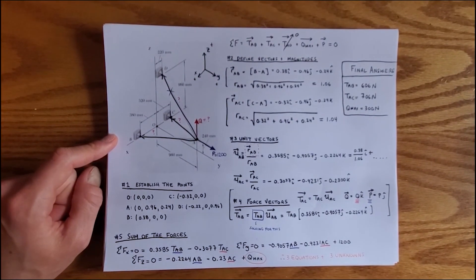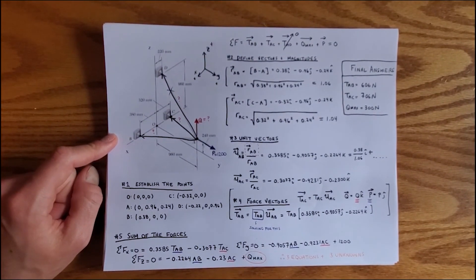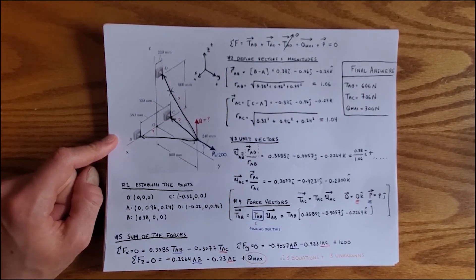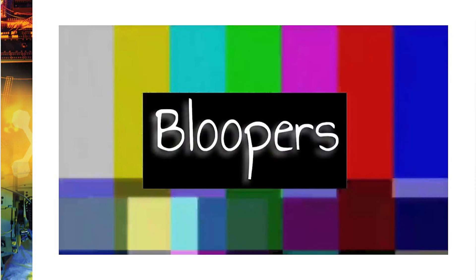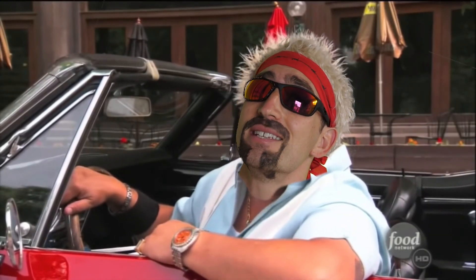And we are done with our first 3D problem. By following the five steps — establishing the points, defining vectors and magnitudes, setting up unit vectors and force vectors, and summing the forces — the problem becomes straightforward. The solutions will be uploaded to the slides. Gaffietti here, rolling out until the next episode of Triple D — 3D Statics.